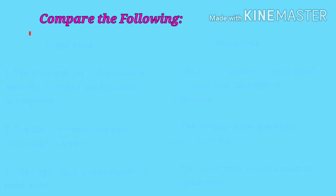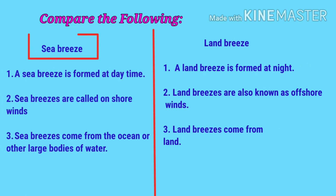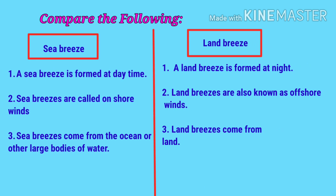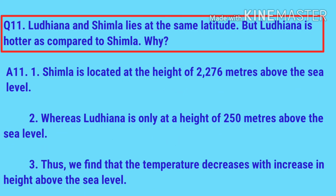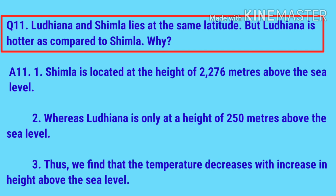Compare sea breeze and land breeze. A sea breeze is formed during daytime — sea breezes are called onshore winds and come from the ocean or other large bodies of water. A land breeze is formed at night — land breezes are also known as offshore winds and come from the land.